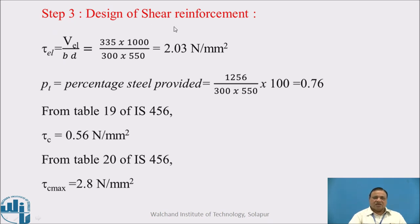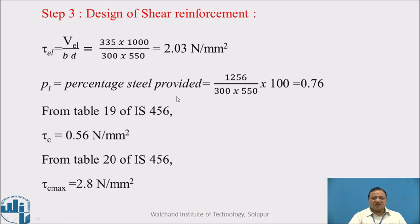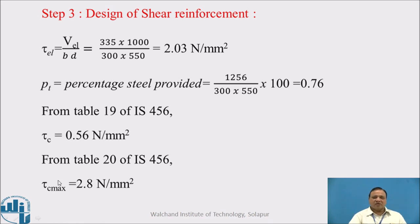Third step: design of shear reinforcement. We find the equivalent nominal shear stress tau_VEL, which equals VEL divided by (b × d), and it works out to be 2.03 N/mm². Referring to Table 19 of IS 456, we calculate the percentage of steel provided — 4 bars of 20 mm diameter gives a steel percentage of 0.76. From Table 19, the shear strength of concrete tau_C is 0.56 N/mm².